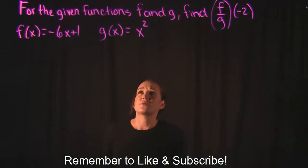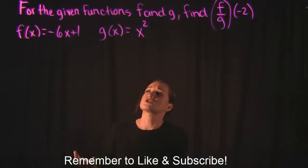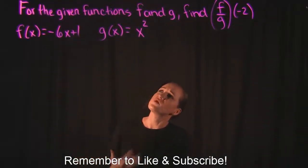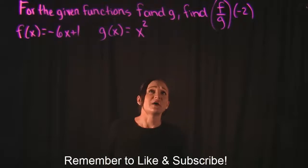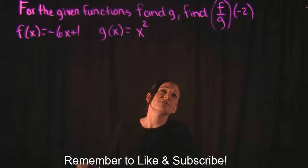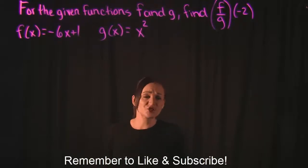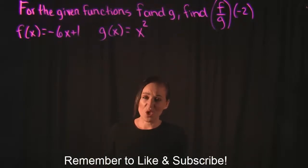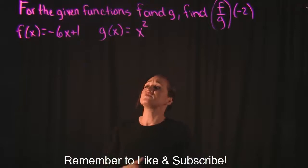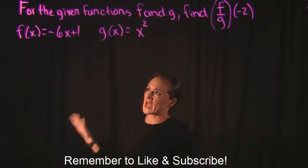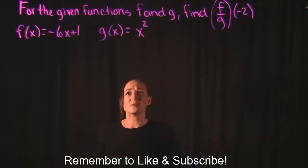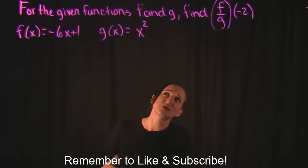For this video, our instructions say: for the given functions f and g, find f divided by g of negative 2. We're given two functions: f of x is equal to negative 6x plus 1, and g of x is equal to x squared.